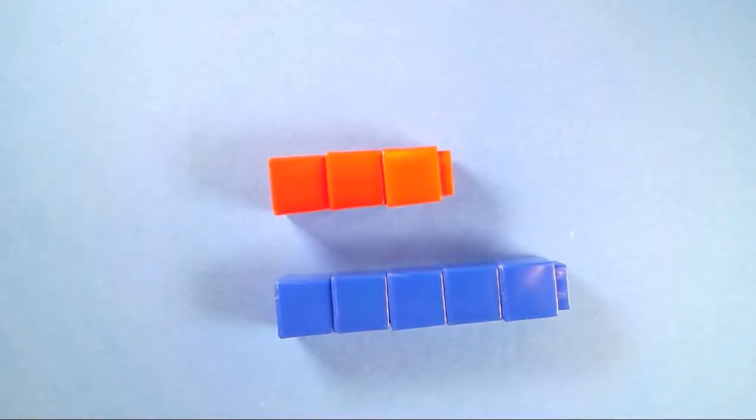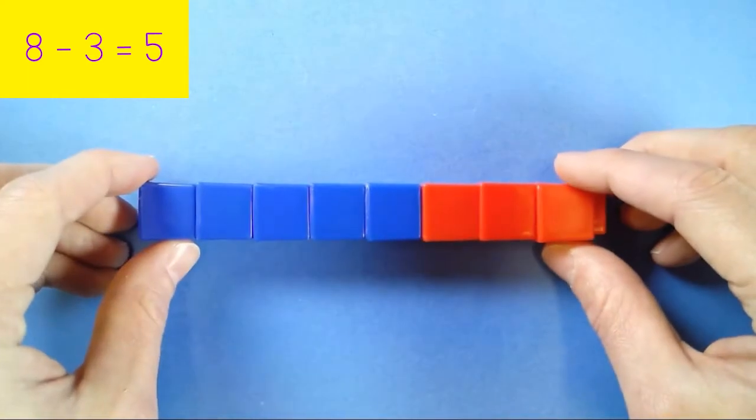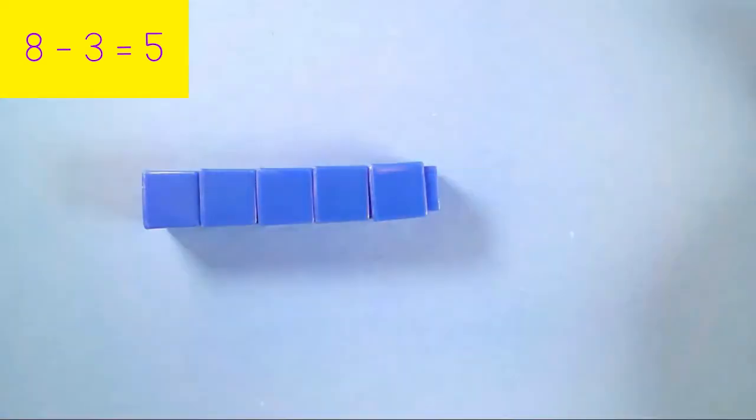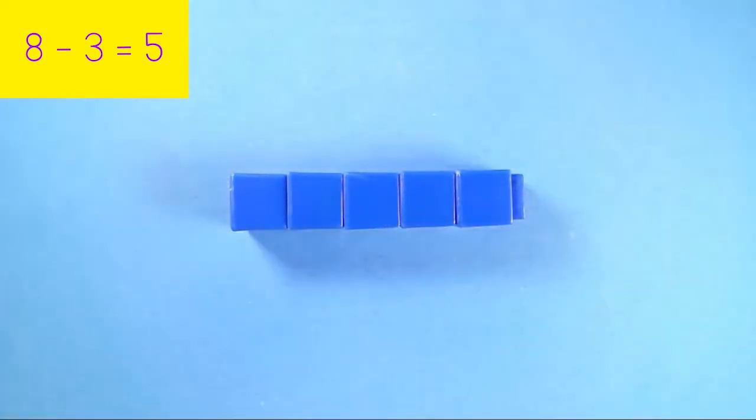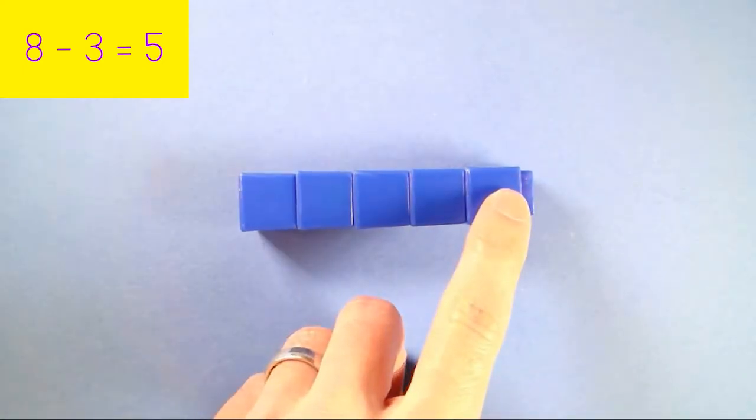Now, let's take a look at these subtraction sentences that Dino came up with. The first one he said was 8 minus 3 equals 5. To do this one, put all of your connecting cubes together to create 8. Let's subtract 3 from this bar. Here's 3. 1, 2, 3. 3 red. If I subtract or remove them, how many are you left with? 1, 2, 3, 4, 5. Just like Dino wrote. 8 minus 3 equals 5.